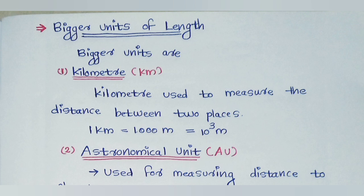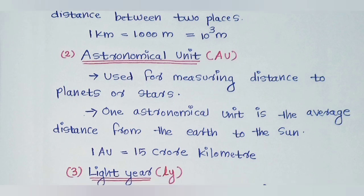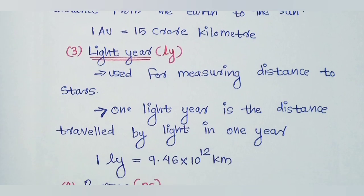The next is the astronomical unit (AU), used for measuring distances to planets and stars. The AU is the average distance from the Earth to the Sun, approximately 1.5 × 10¹¹ m.